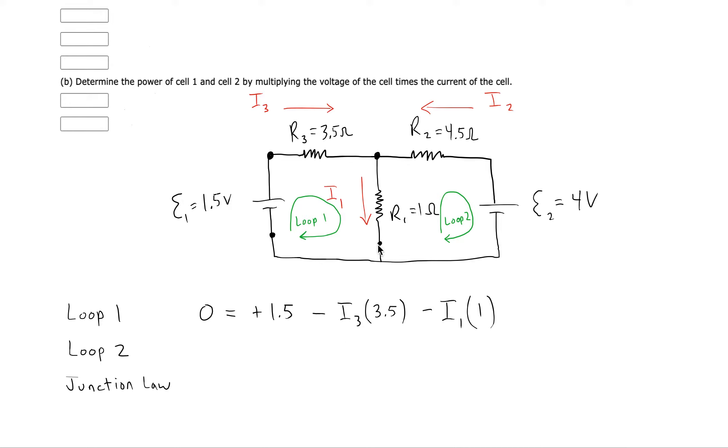For loop 2, I'll start at this point. I'll go clockwise. Okay, but when I go from this point to the other side, I see that we're going against current.